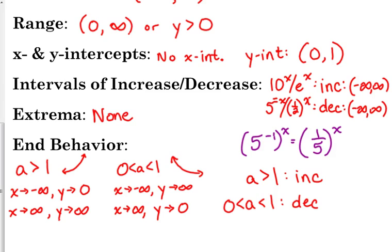Domain is all real numbers. That one's easy to remember. The range, that one's easy to remember. You're never going to be negative or less than zero, or equal to zero.